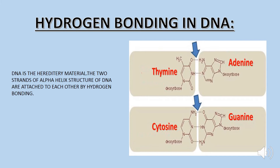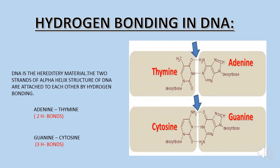Hydrogen bonding is also present in DNA. DNA is the hereditary material which transfers genetic characteristics from one generation to another. The two strands of the double helix structure of DNA are attached to each other by hydrogen bonding. The DNA bases are adenine, thymine, cytosine, and guanine. Adenine makes two hydrogen bonds with thymine, whereas guanine makes three hydrogen bonds with cytosine.